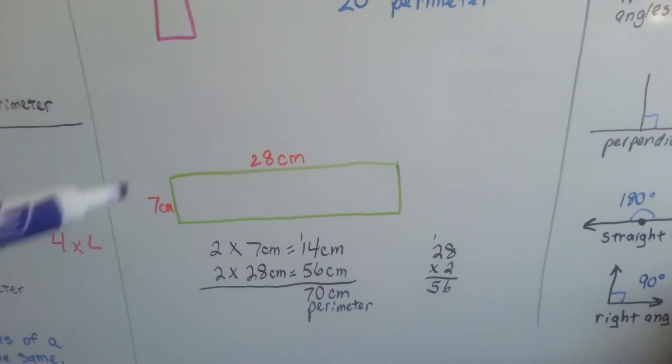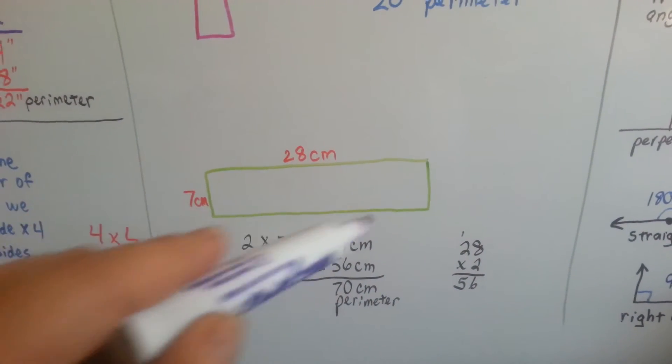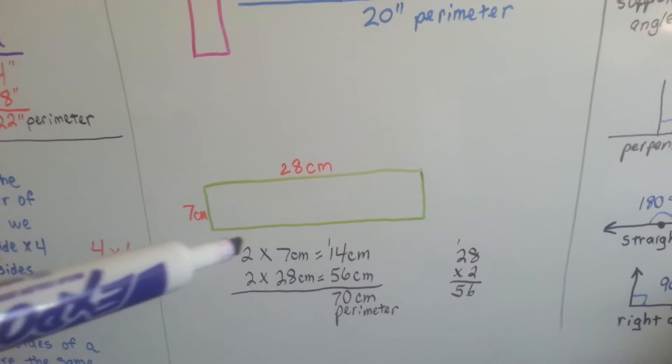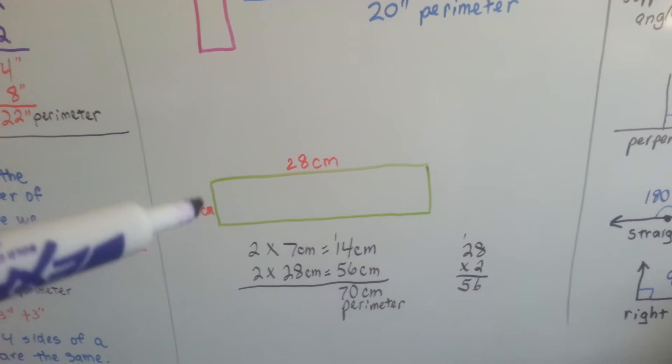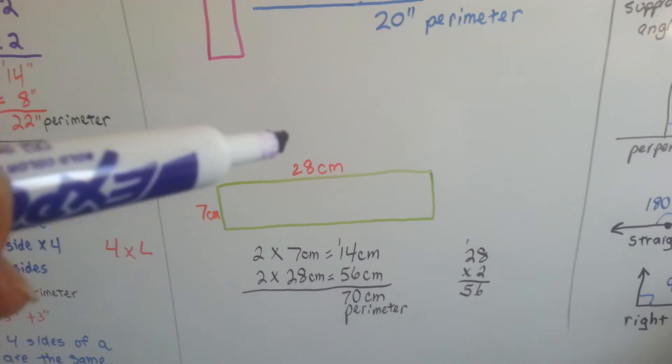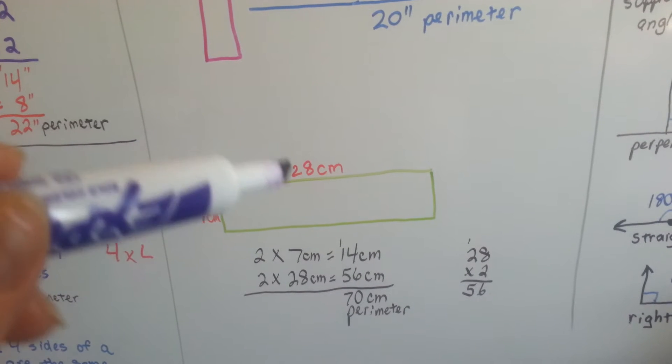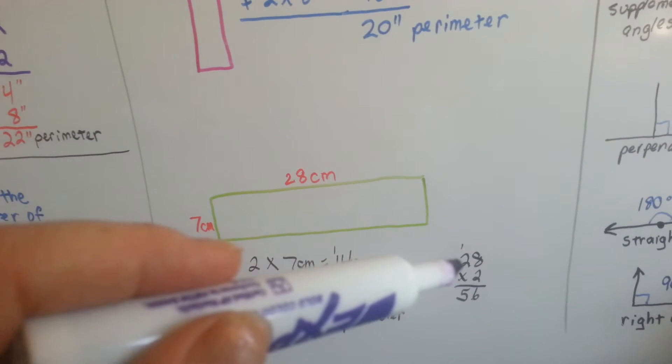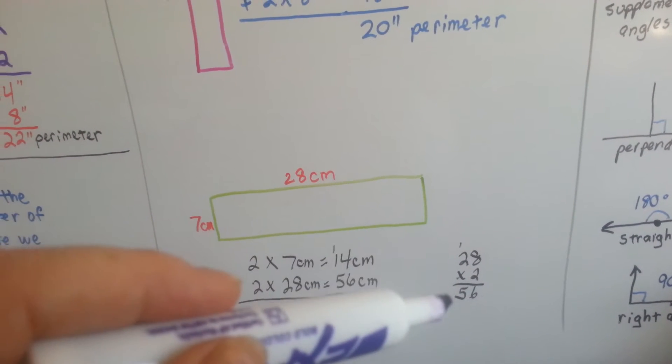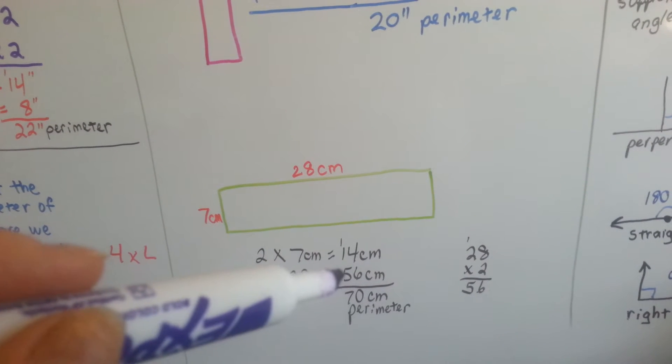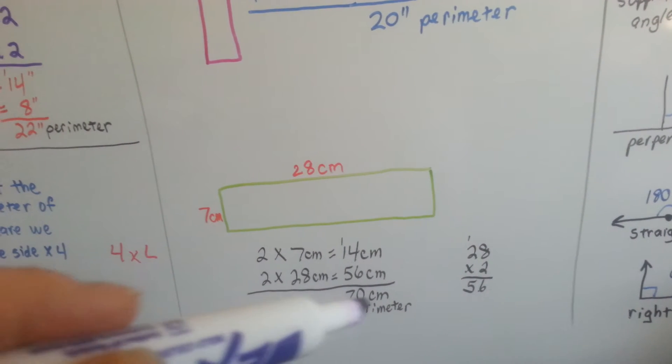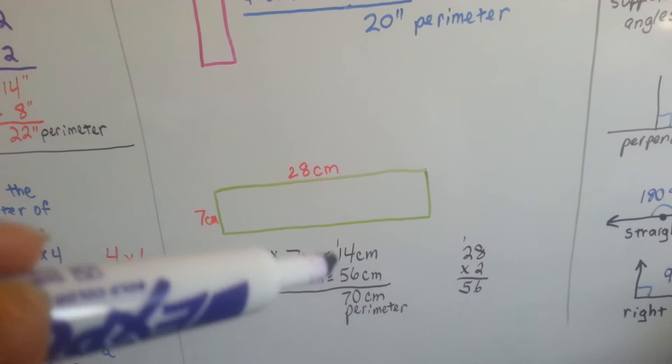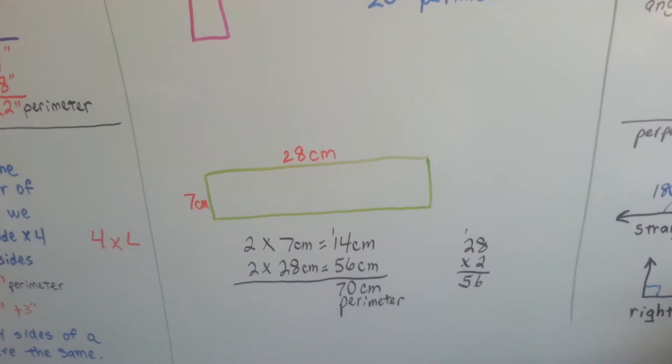For this one, we've got a 7 centimeter side, so we know that's 7 centimeters. This is 28 centimeters, so that must be 28 centimeters. So we multiply 2 times 7 centimeters, which is 14, and 2 times 28 centimeters. 2 times 28, 2 times 8 is 16. We carry the 1, put the 6 down. 2 times 2 is 4, plus the 1 is 5, so it's 56. So 2 times 28 is 56 centimeters. We add them together. And 4 plus 6 is 10. We carry the 1 and put the 0 down. 5, 6, 7, 70 centimeters perimeter.